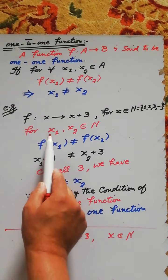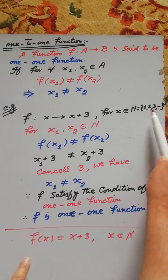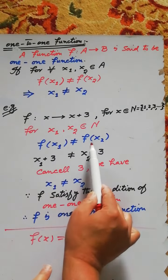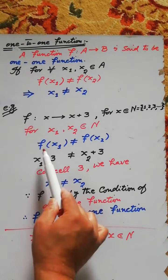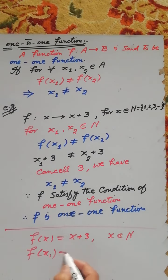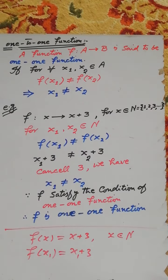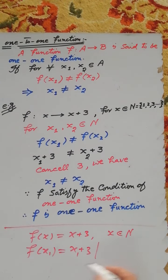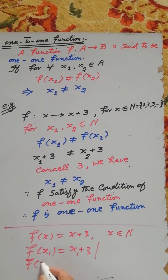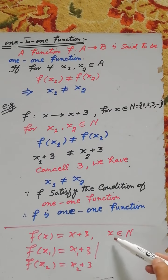Suppose for any two elements x1 and x2 belonging to the set of natural numbers, f(x1) is not equal to f(x2). Then the value of the function at point x1 is x1 + 3, and the value of the function at point x2 is x2 + 3, where x1 and x2 are elements of the natural numbers.